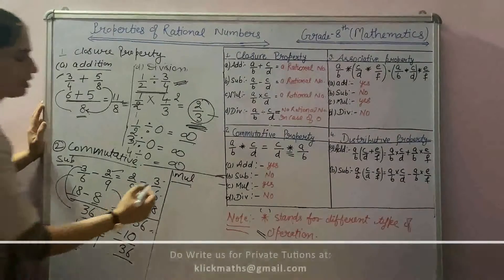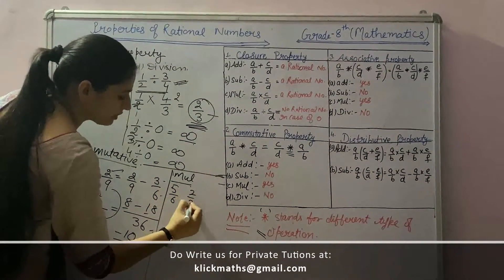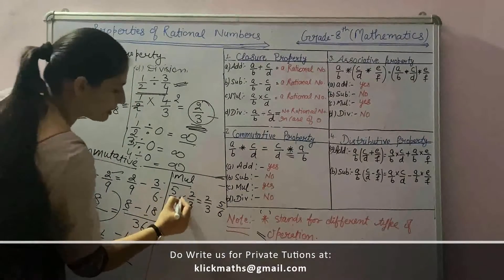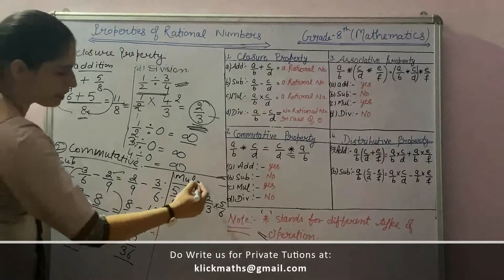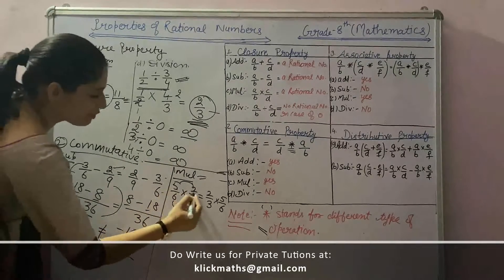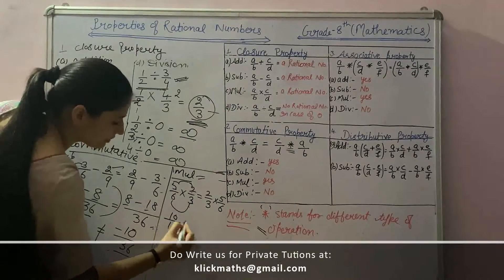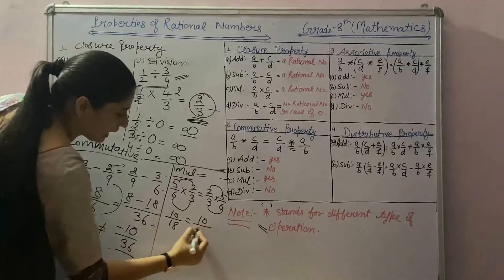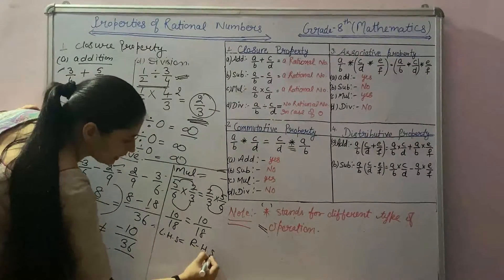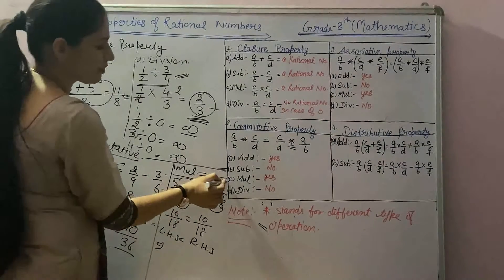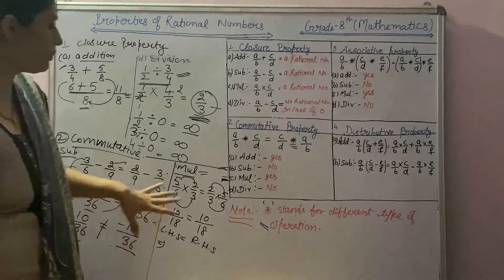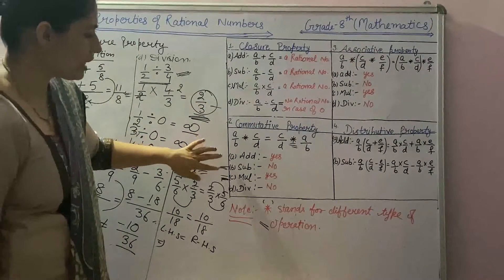Let's take another example for multiplication. Take two rational numbers, 5 by 6 and 2 by 3. On the right-hand side, 2 by 3 and 5 by 6, and multiply them. In multiplication, we multiply numerator by numerator and denominator by denominator: 5 times 2 is 10 and 6 times 3 is 18. In the same way on the right-hand side, 2 times 5 is 10 and 3 times 6 is 18. Right-hand side and left-hand side are equal. This implies multiplication is commutative for rational numbers. You can also check commutative property for addition and division.